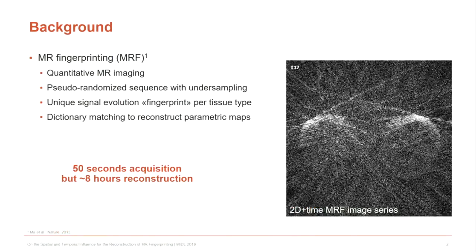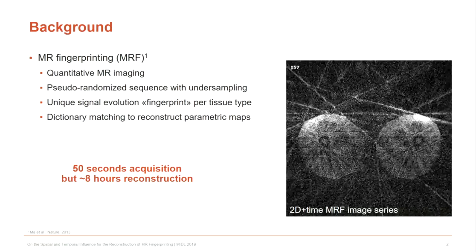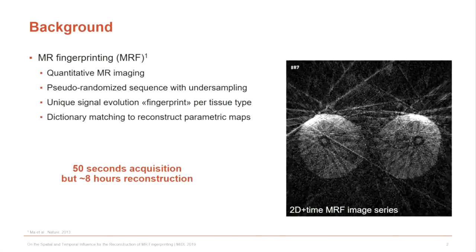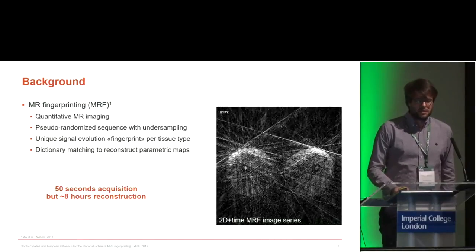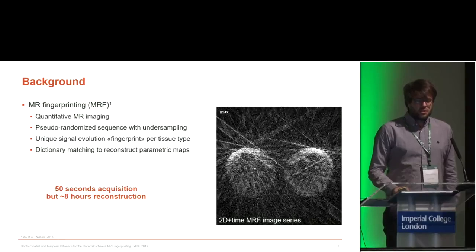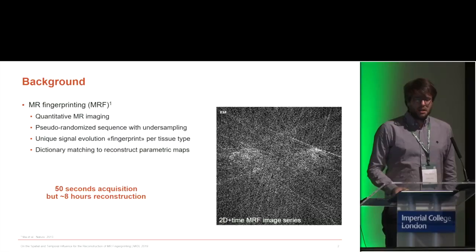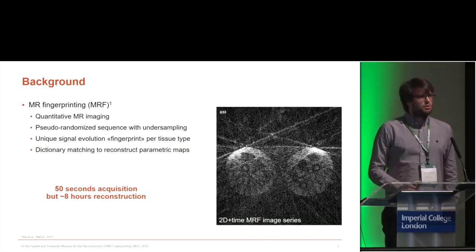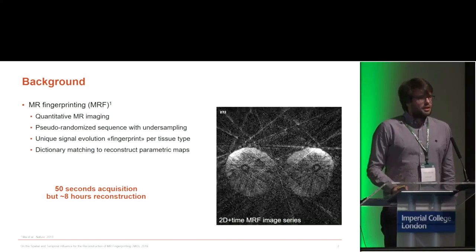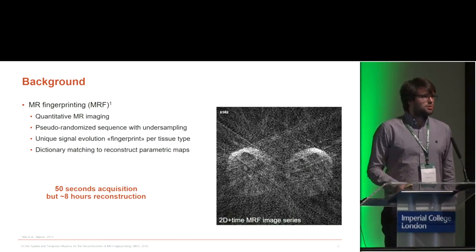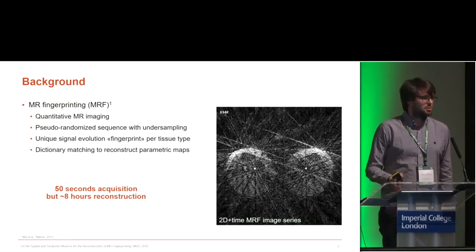Magnetic resonance fingerprinting, or MRF, is a concept for quantitative MR imaging. It relies on a pseudo-randomized sequence with undersampling of k-space. From this acquisition, which is usually quite fast — in our case 50 seconds — we obtain unique signal evolutions or fingerprints per tissue type at each voxel. Using these fingerprints, we can match them to a dictionary of pre-computed fingerprints and reconstruct parametric maps.